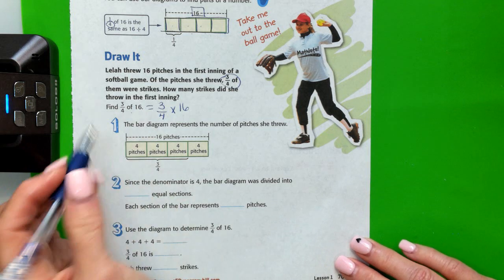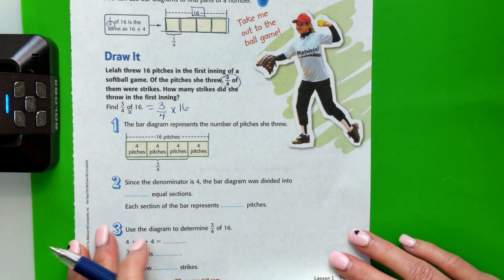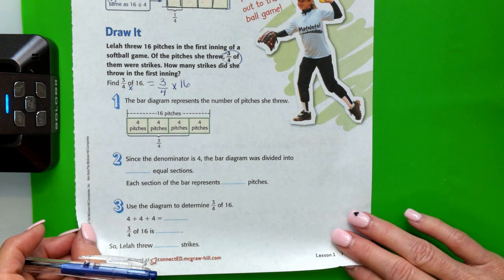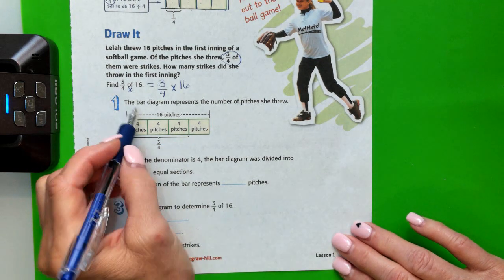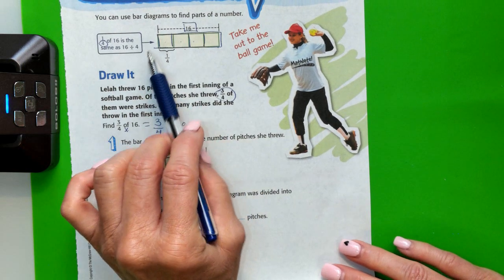Of means times. So the bar diagram represents the number of pitches that she threw. Remember, we started that up here at the top.